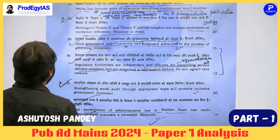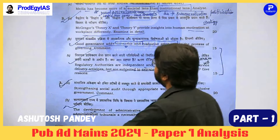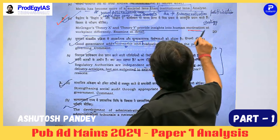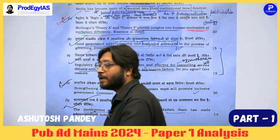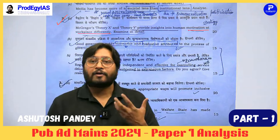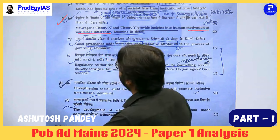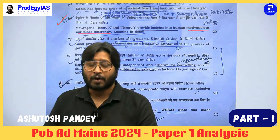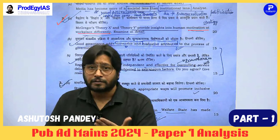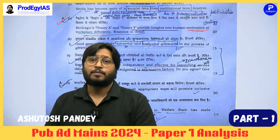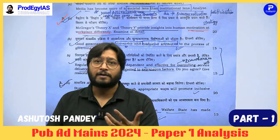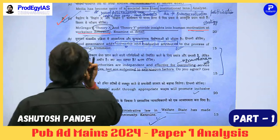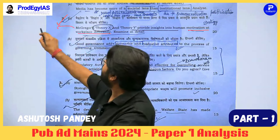Question 2 (20 marks): McGregor's Theory X and Y provide insights into human motivation at the workplace differently. Whenever we think of people working in organizations, there should be a binding force — loyalty, commitment, motivation, and enjoying the work. This cannot be just monetary benefit; it can also be pleasure. McGregor was influenced by Follett, Bernard, and others. He introduces two world views — or managerial cosmologies — for viewing organization.